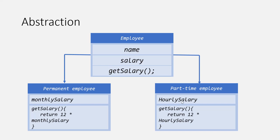In the parent object, we specify common properties like name and salary. Properties specific to the type of employee are specified in that child object. For example, the salary structure differs: permanent employee salary is calculated on a monthly basis, and part-time employee salary is calculated on an hourly basis. In the parent employee object, we declare a method called getSalary but only declare it — not implement it. The implementation depends on the type of employee. We are only specifying the functionality, not the implementation, and this is called abstraction.